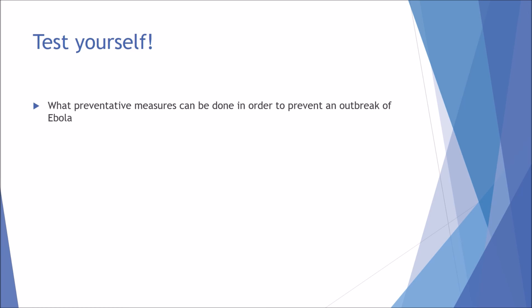That concludes the main content. Here are two test questions: What preventative measures can be done to prevent an Ebola outbreak? And what are the common signs and symptoms of Ebola? Thank you for watching — this was the second part of my emerging diseases presentation. If you haven't watched the previous one, I highly recommend it. For further information, use the WHO link from the beginning, or visit PubMed, the CDC website, or the WHO website. There is plenty of research available given the scale of the outbreak. Thanks for watching — I hope you found this useful.